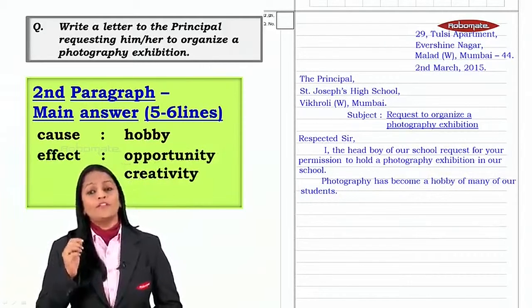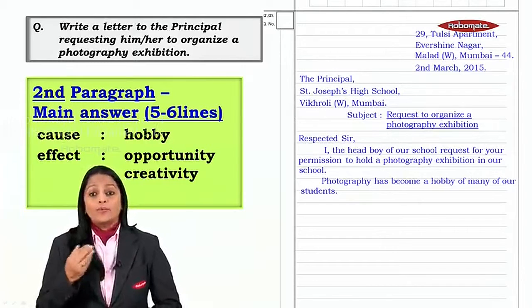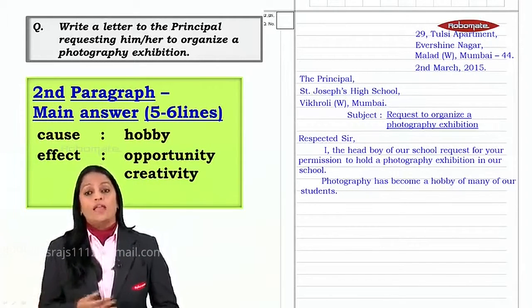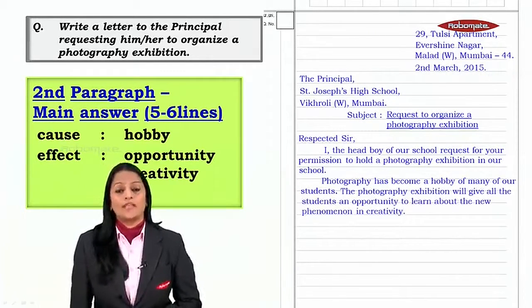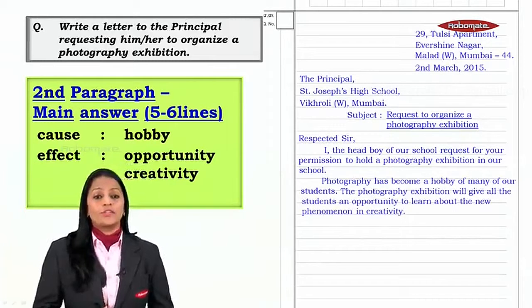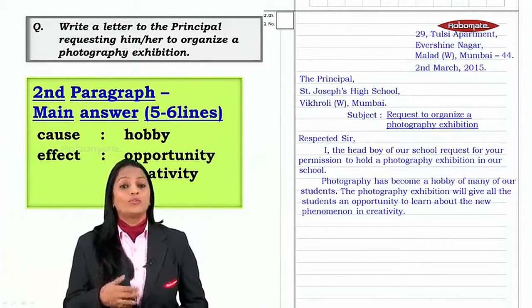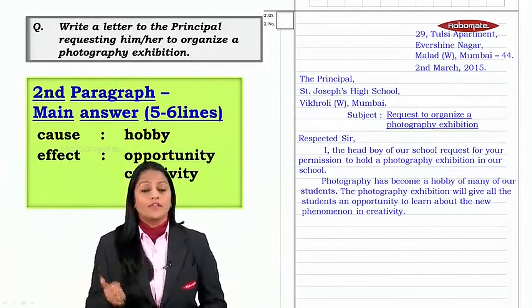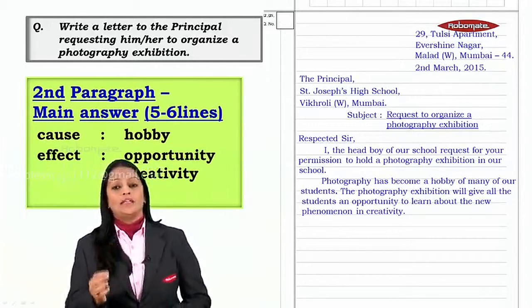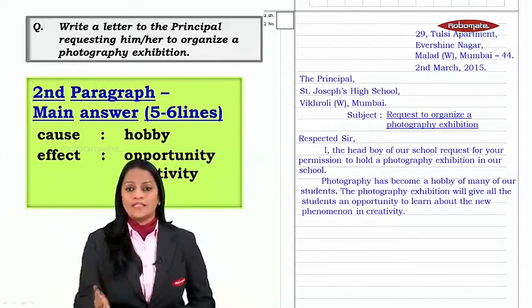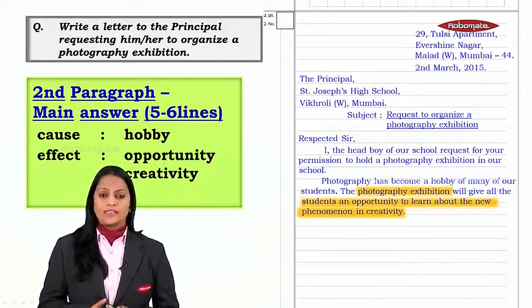Next, we are going to talk about the effect. What will happen if this photography exhibition is held? It will give an opportunity to many to learn and to pursue their hobby, and it will also enhance their creativity. So the sentence would be: 'The photography exhibition will give the students an opportunity to learn and to become more creative' or 'it will create a new phenomenon in creativity.' You can develop the sentence in different ways using these points.